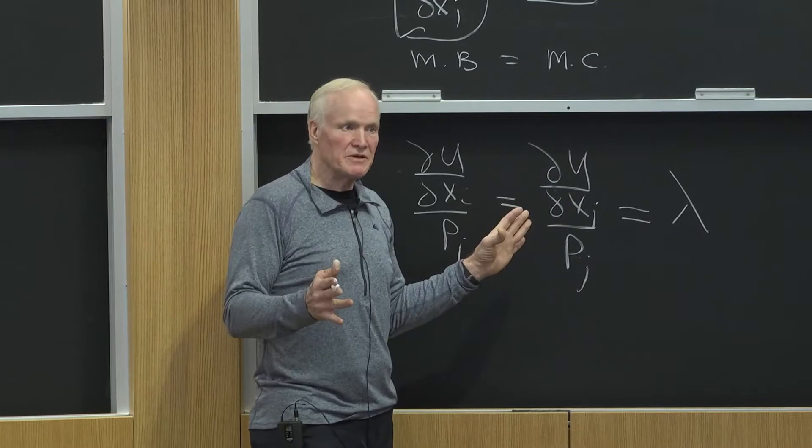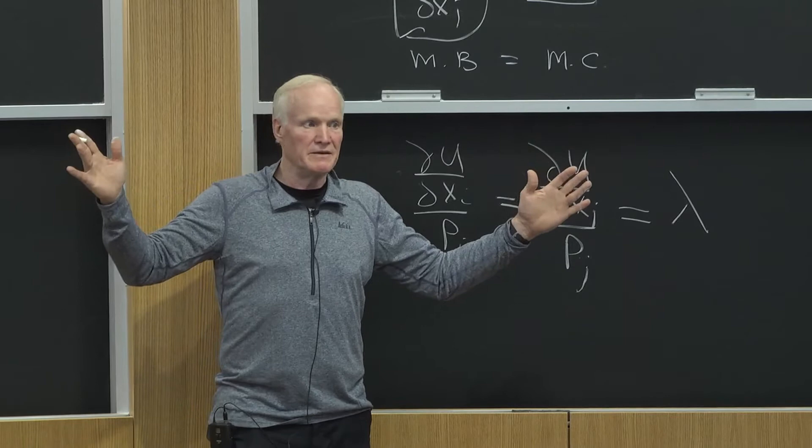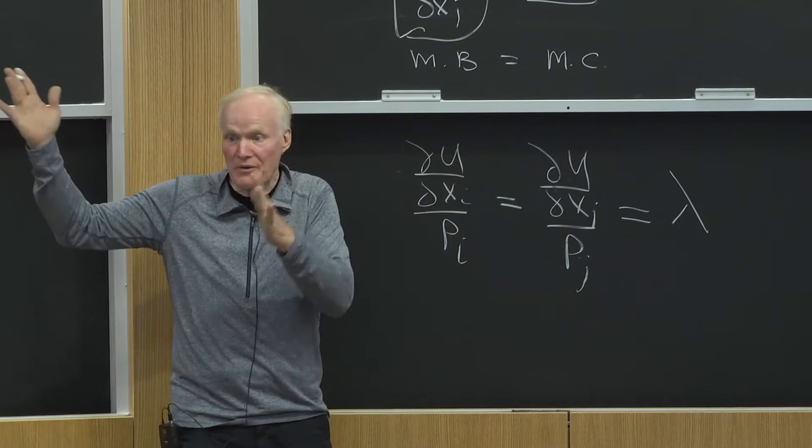What if the utility per dollar were greater on good i than it was on good j? Then what should you do? You should move dollars from j to i until they're equal. Right? Then you can't be at an equilibrium if those two things are not equal.